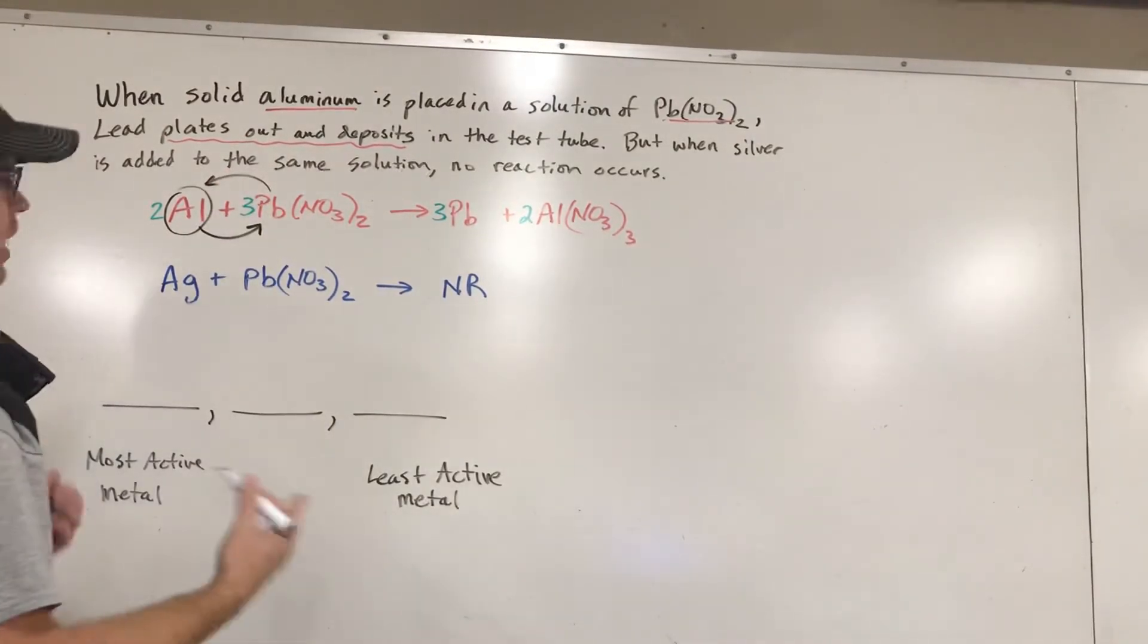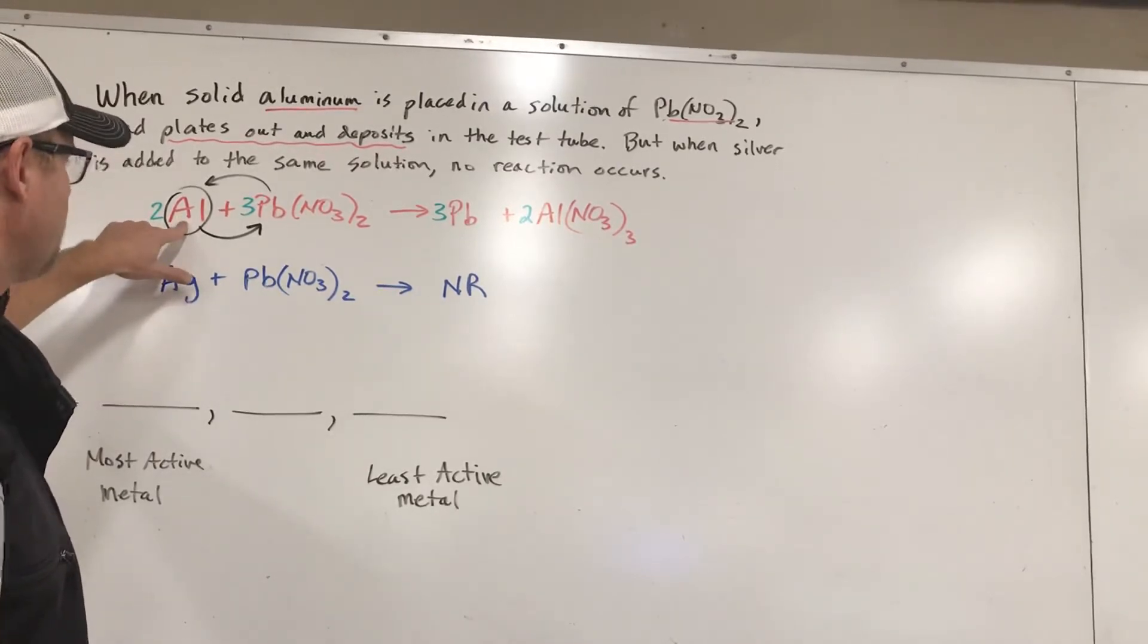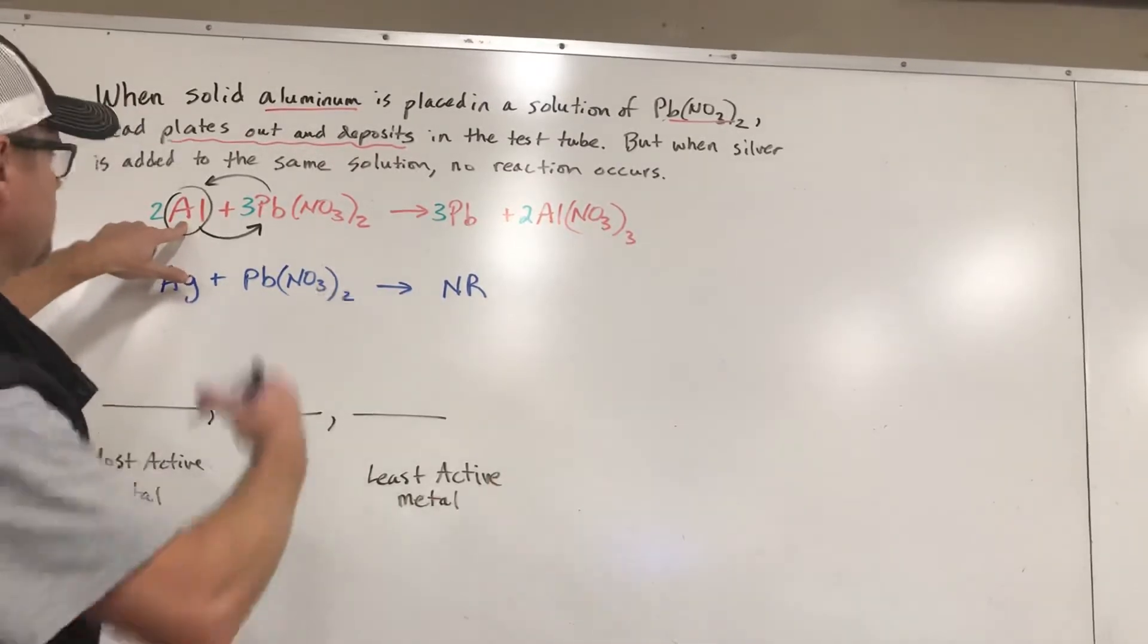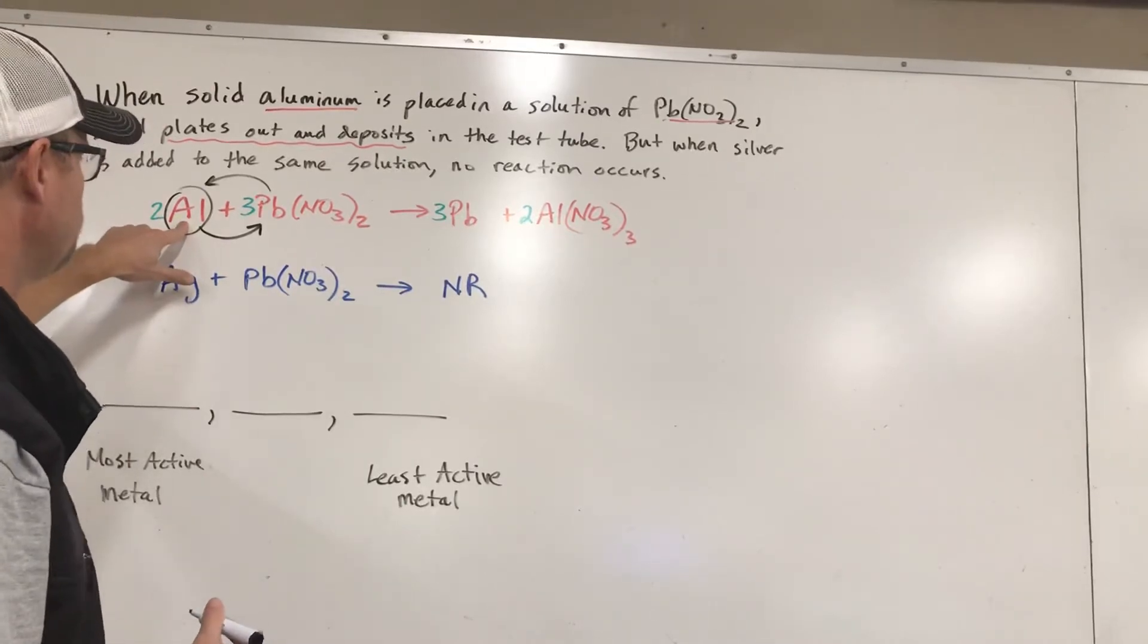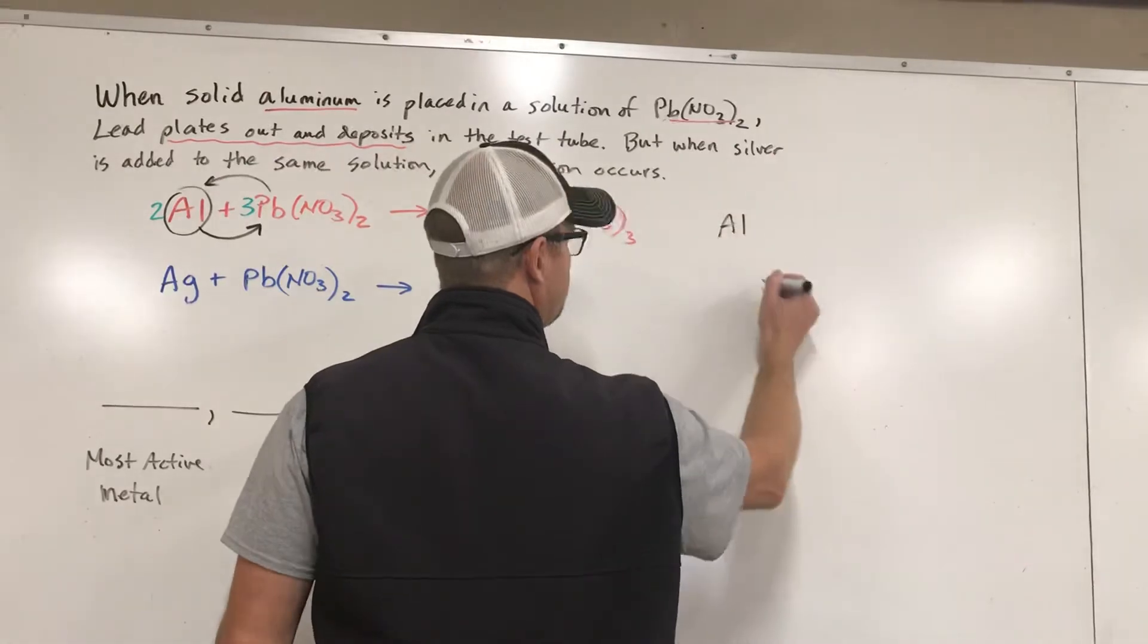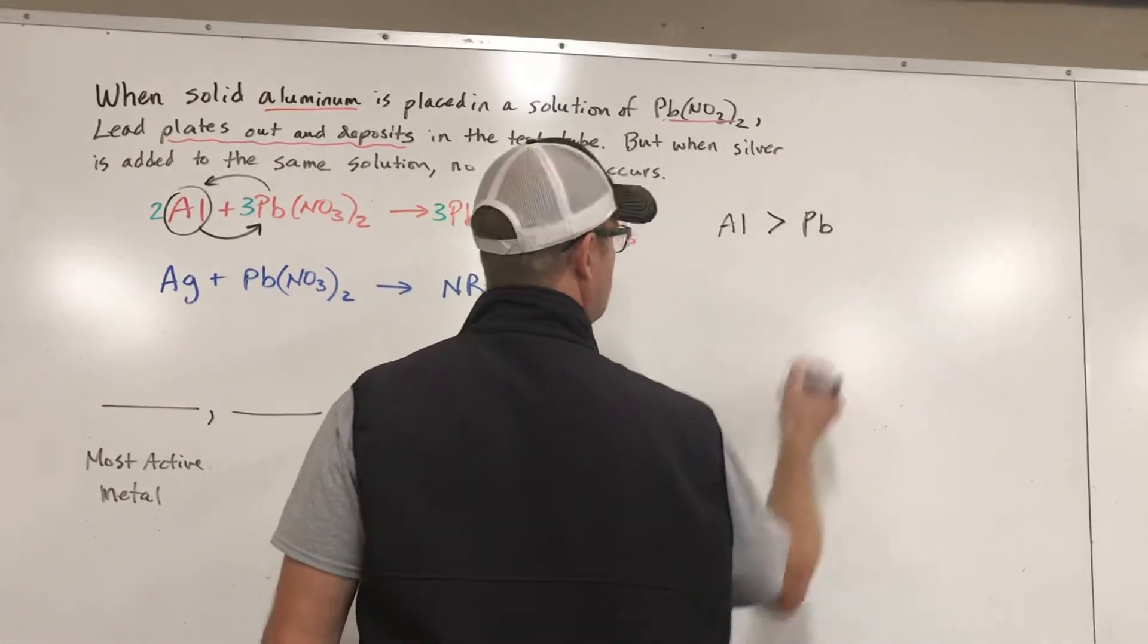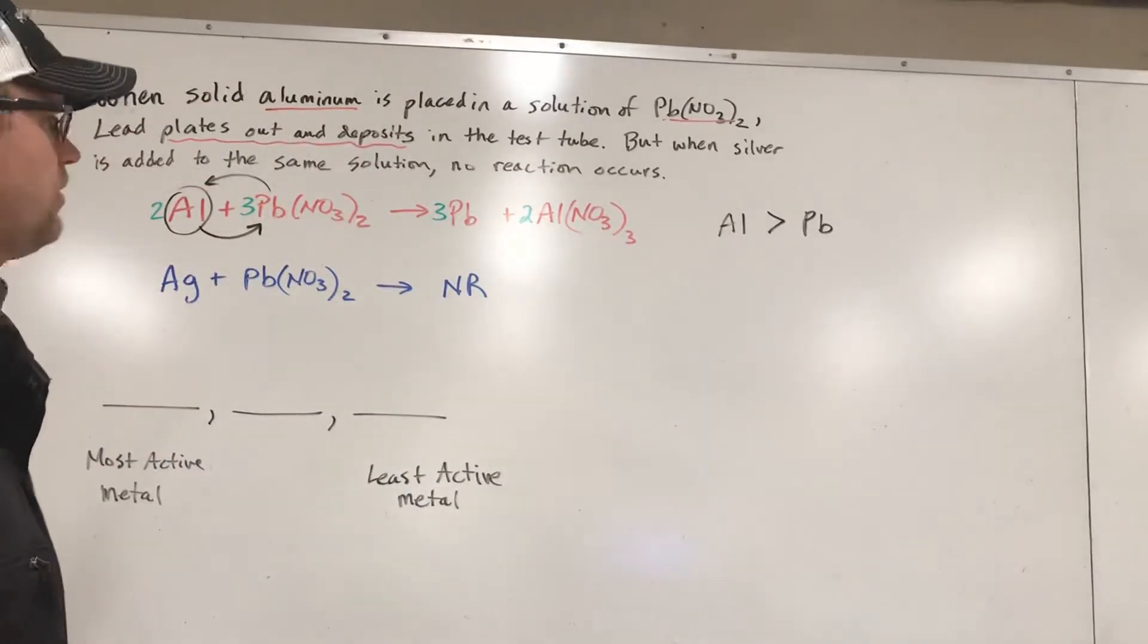So when you see a reaction actually occur, it means this solid metal was reactive enough to say, hey, I'm taking your spot and it kicks the lead out. And that means aluminum is more reactive than lead. I'm going to write that over here. Aluminum is more reactive than lead. I'm just going to do a greater than sign, like it's higher in reactivity.